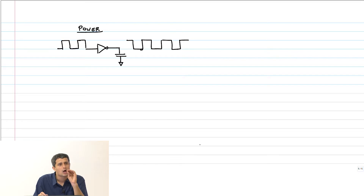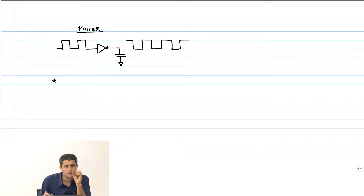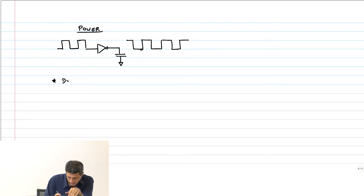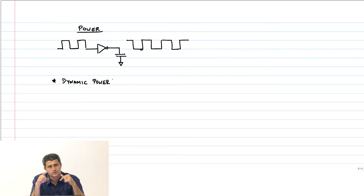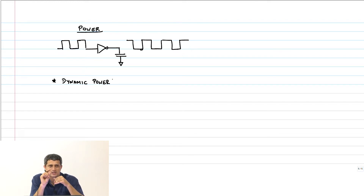So we need to now quantify how much of this power or energy is involved. It turns out that there are three kinds of power or energy involved in CMOS circuits. One is dynamic power — dynamic power is just what I described: the input is switching, the output is switching, which means the capacitor is continuously charging or discharging, and this is leading to some power loss. It is purely this capacitor charging and discharging power that we refer to as dynamic power.